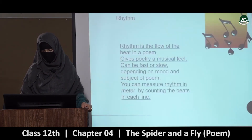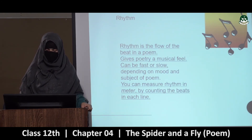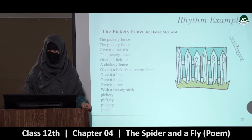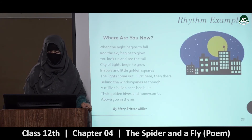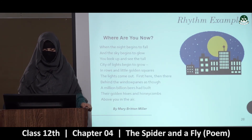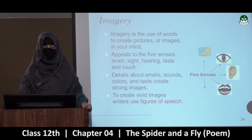So rhythm — rhythm is the flow of beat in a poem; gives poetry a musical feel; can be fast or slow depending on mood and subject of the poem. You can measure rhythm in meter by counting the beats in each line. Rhythm ki example: 'The pickety fence, the pickety fence, give it a lick, it's the pickety fence, give it a lick it's a clickety fence, give it a lick it's a lickety fence, give it a lick give it a lick with a rickety stick pickety wickety.' Something like this — toh isme rhythm aapko nazar aayega.